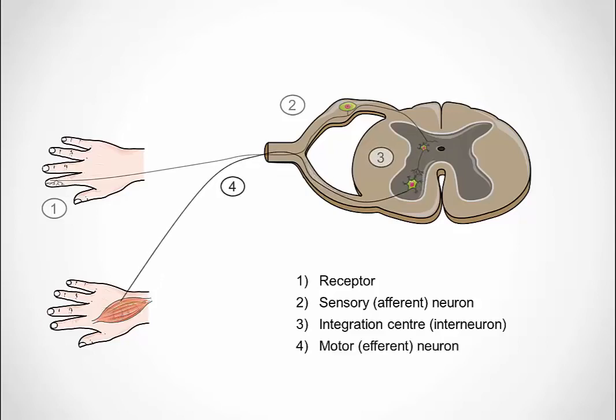Number four, the motor or efferent neuron. This neuron sends an electrical signal out of the central nervous system, thus brain or spinal cord, to the peripheral effector, which is the gland or muscle.